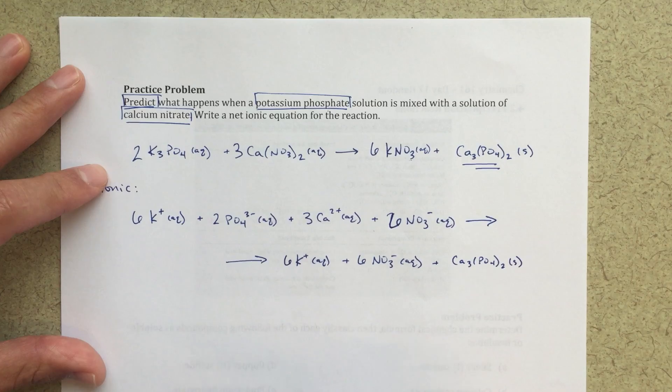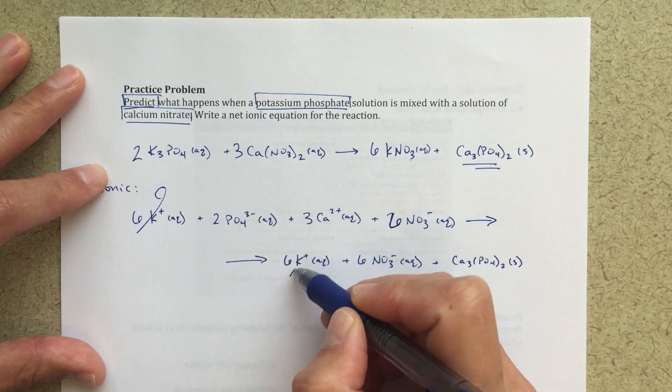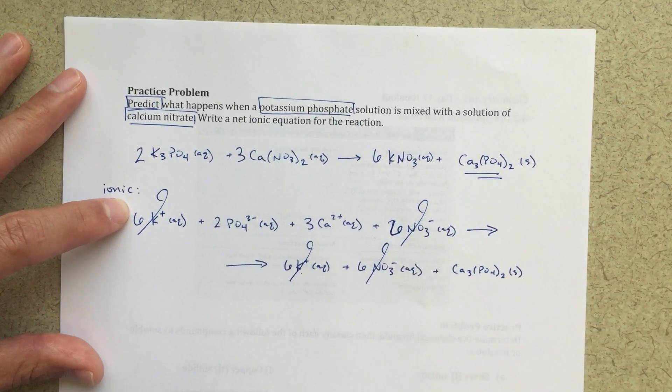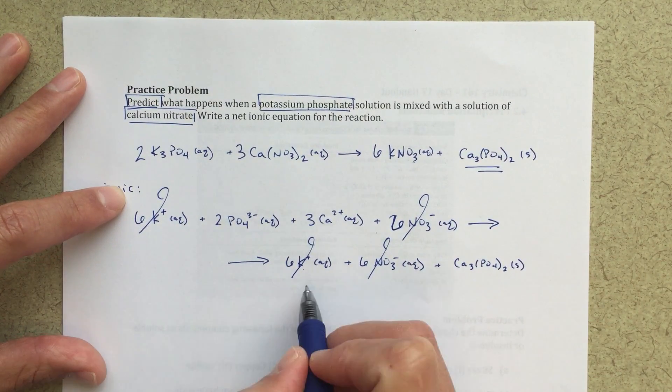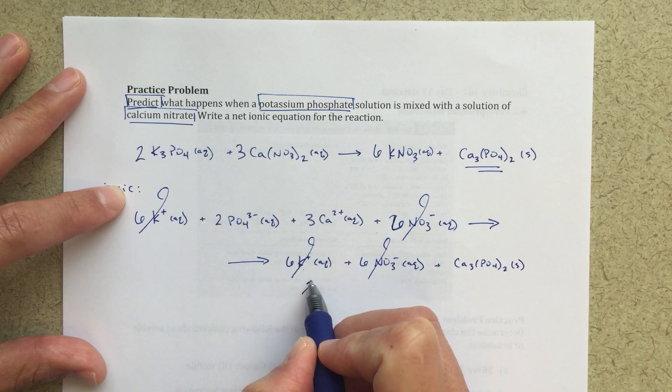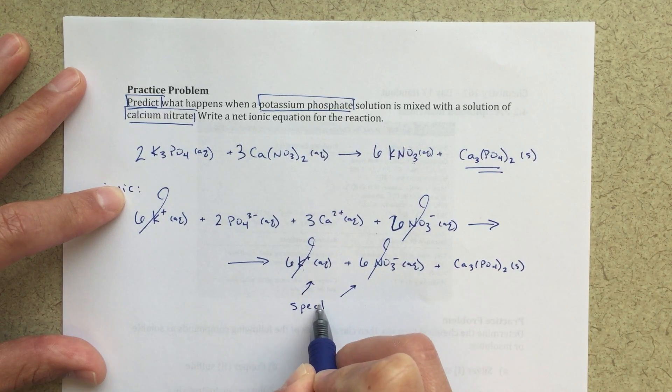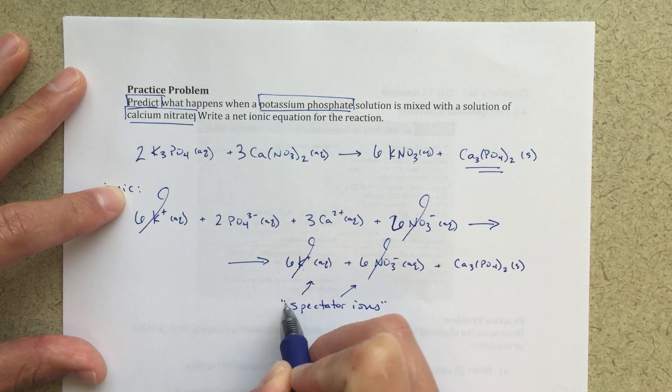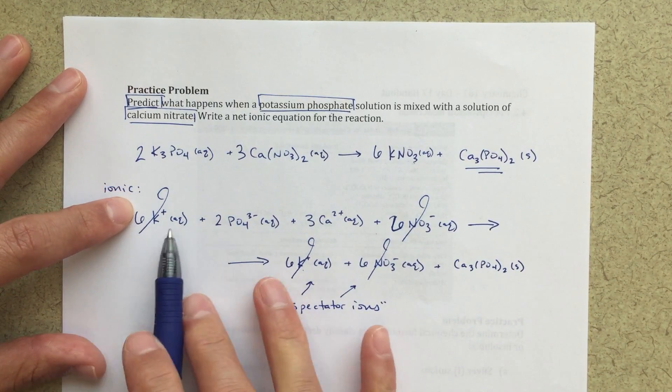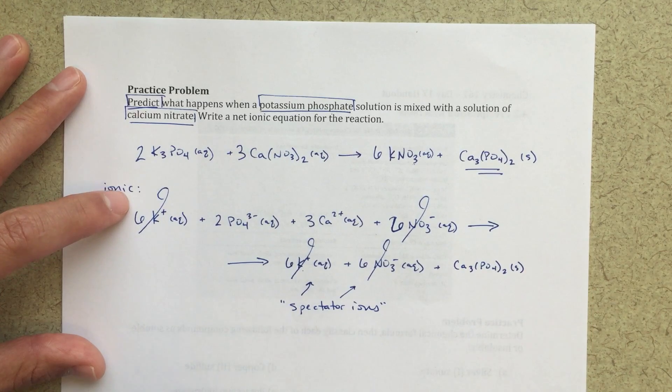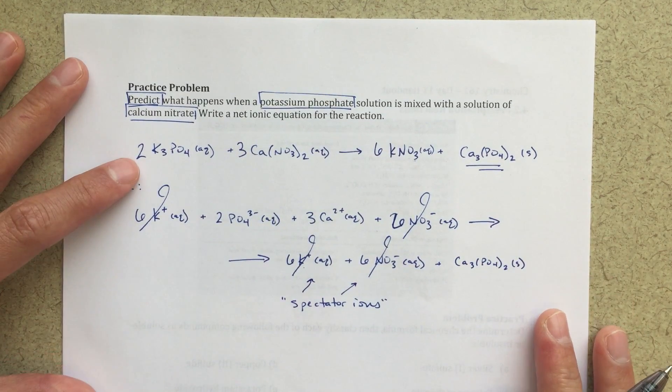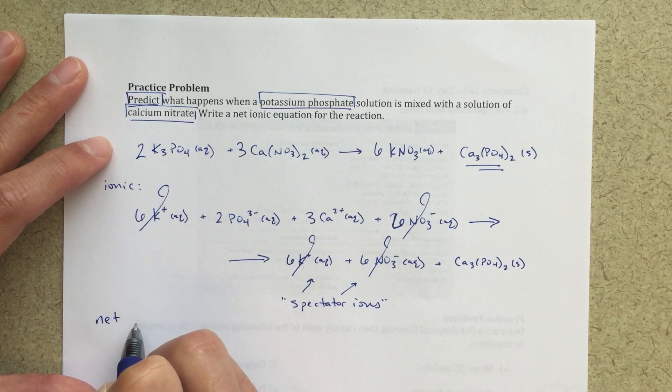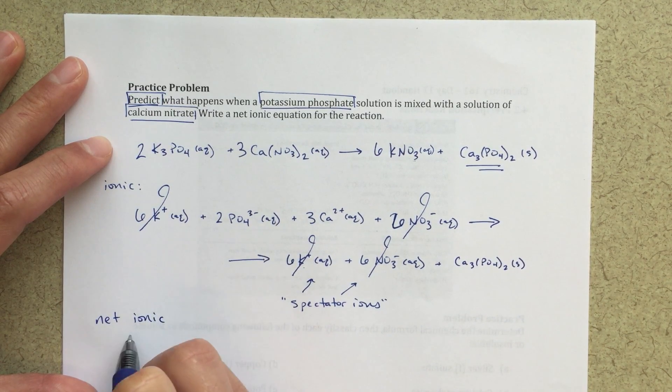The next thing we want to do is cancel out our spectator ions. So I see that I've got six K plus, six K plus, six NO3 minus, six NO3 minus. So I'm canceling out spectator ions. So we'll just draw little arrows here. These are what we call spectator ions. They show up on both the reaction side and the product side. They don't contribute to the overall reaction that's going to be done. So we can actually just cancel them out when we get to our net ionic equation.